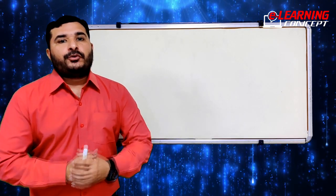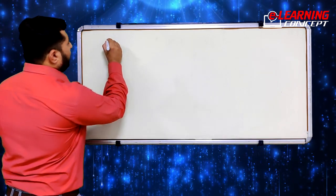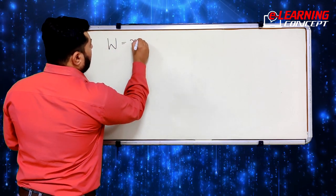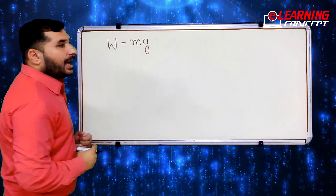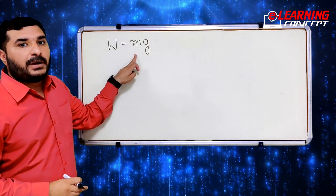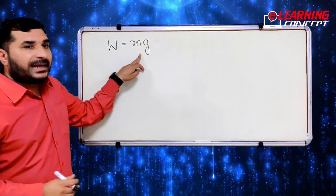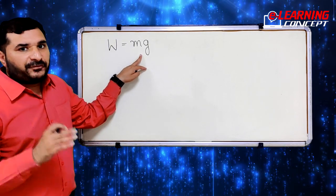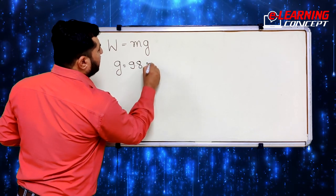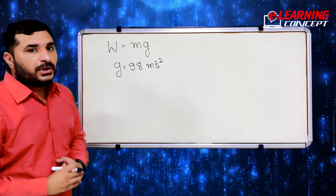In the last lecture we saw the formula for weight. We represent weight as W, and its equation becomes W = m × g. Weight is the product of mass and gravitational acceleration. We have also found the value of gravitational acceleration in previous lectures, which is g = 9.8 m/s², which we take as constant for Earth.